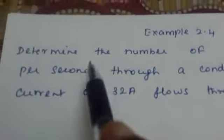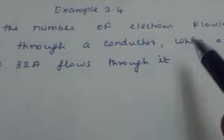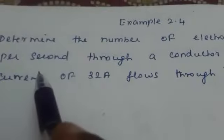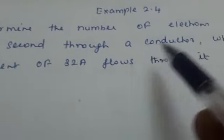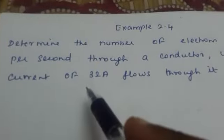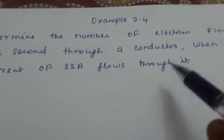Example 2.4. Determine the number of electrons flowing per second through a conductor when a current of 32 ampere flows through it.